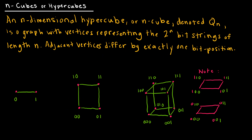An n-cube or hypercube is another type of special graph, with notation Q_n. It is a graph with vertices representing the 2^n bit strings of length n — it's obviously multi-dimensional as you go larger and larger. Each pair of adjacent vertices differs by exactly one bit position. For Q1, we have bits zero and one. For Q2, we doubled that: zero-one on one side, zero-one on the other, adding a zero in front of one copy and a one in front of the other, then connecting the dots.